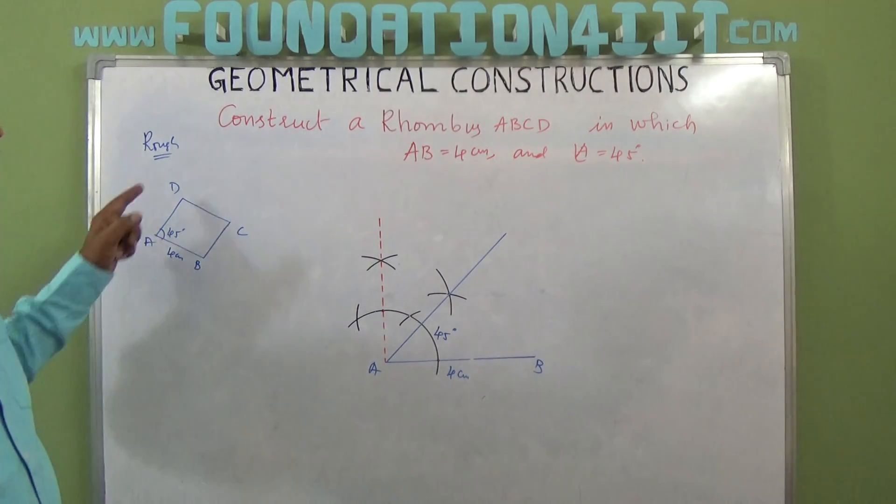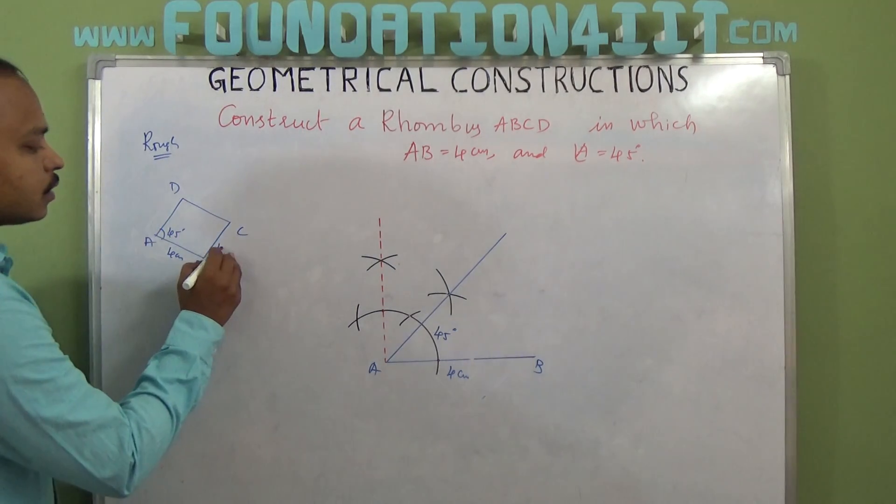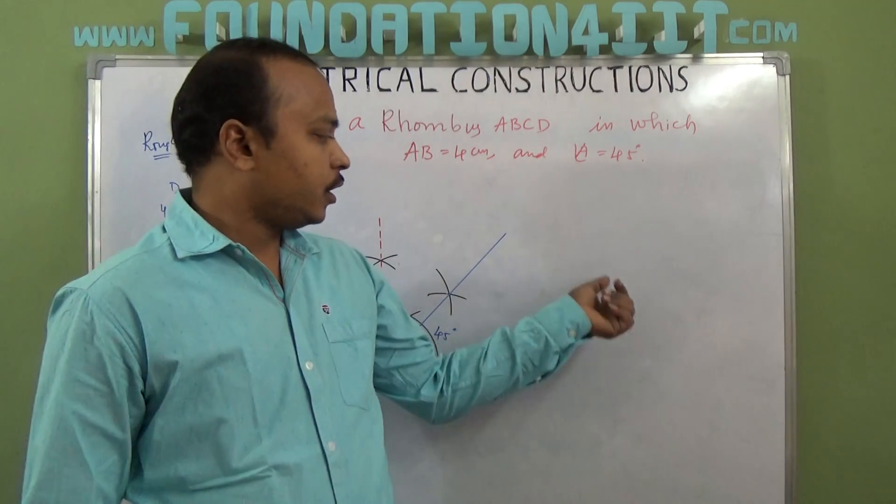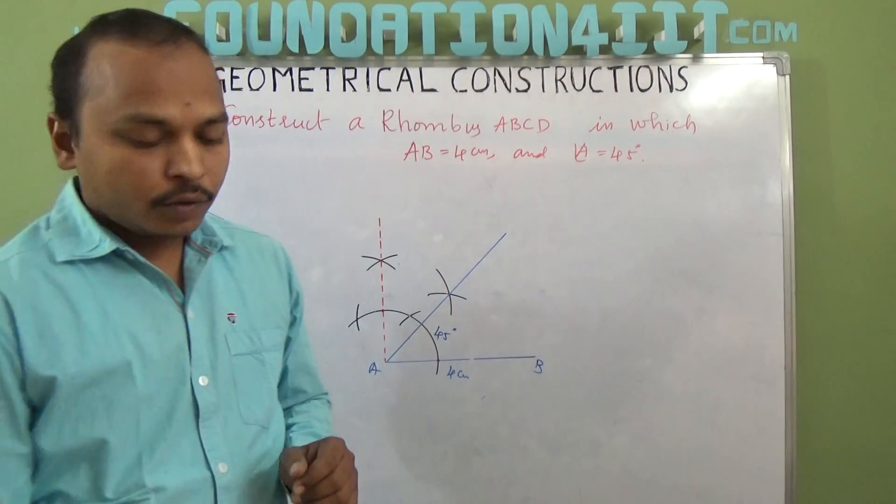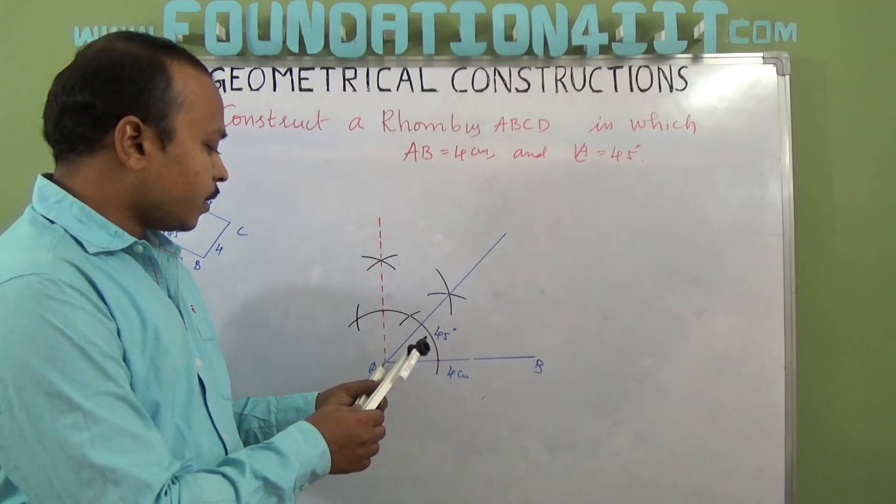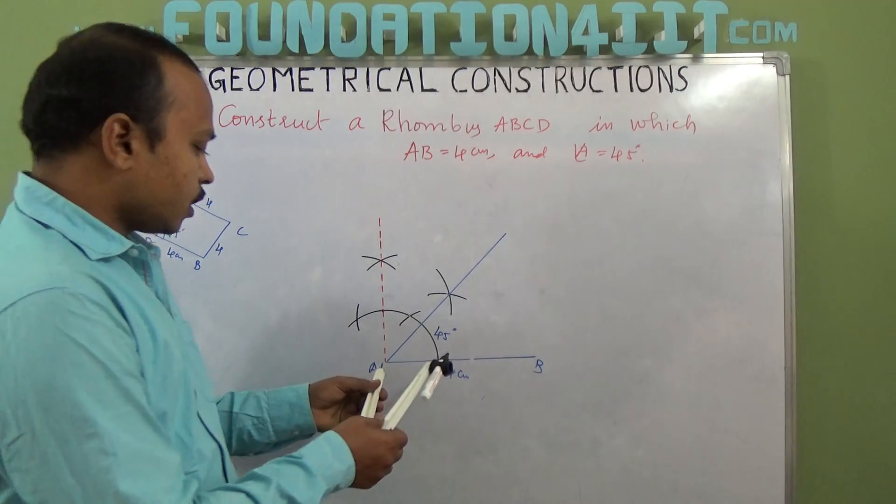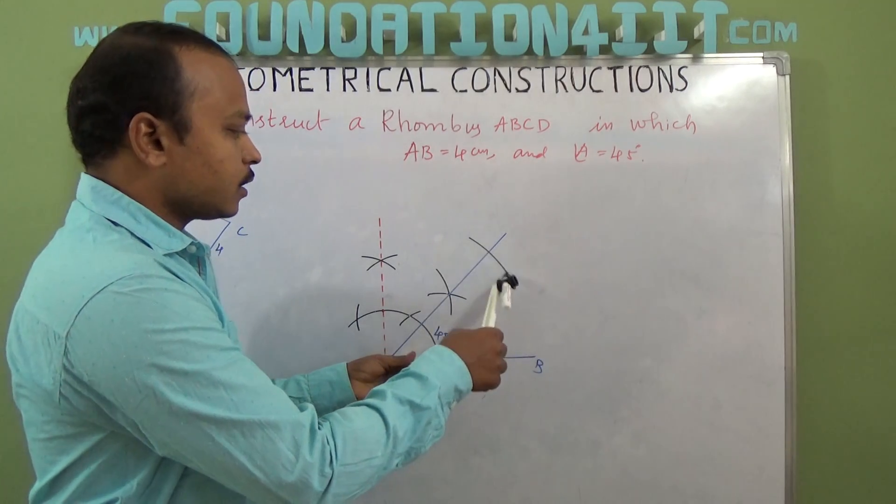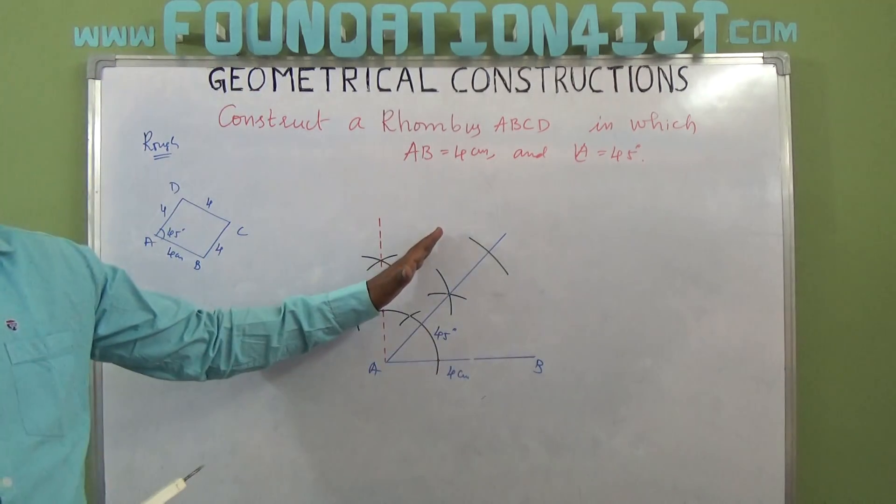Now if you observe, A to D is 4 centimeters because in rhombus all the sides are equal. We have AB, now we need to get C and D. Take the compass from A to B, 4 centimeters, and draw an arc. This point is exactly equal to this.